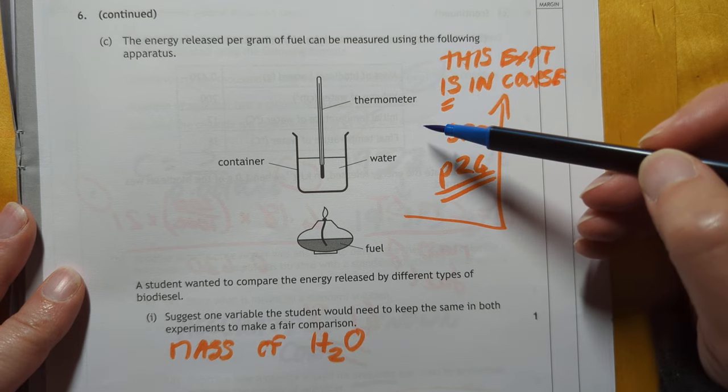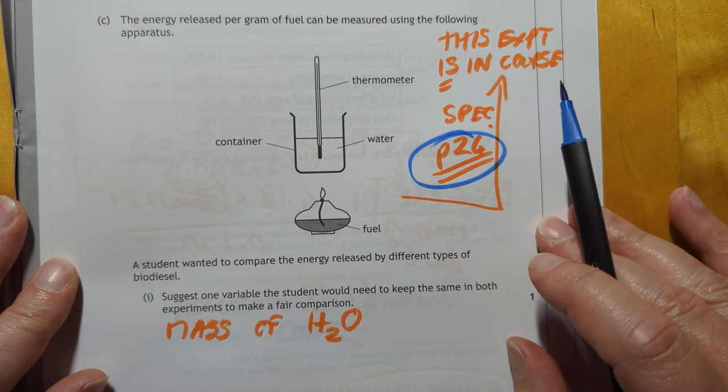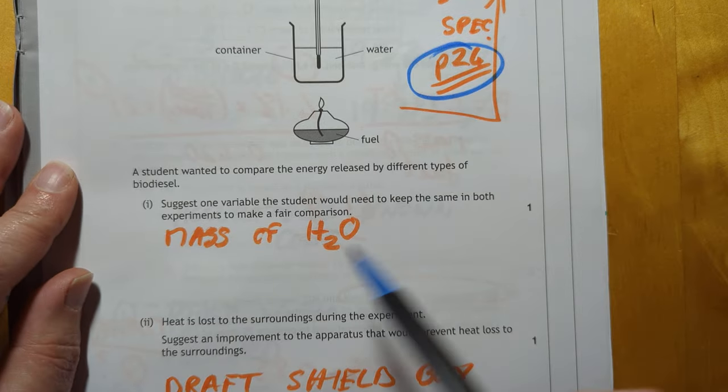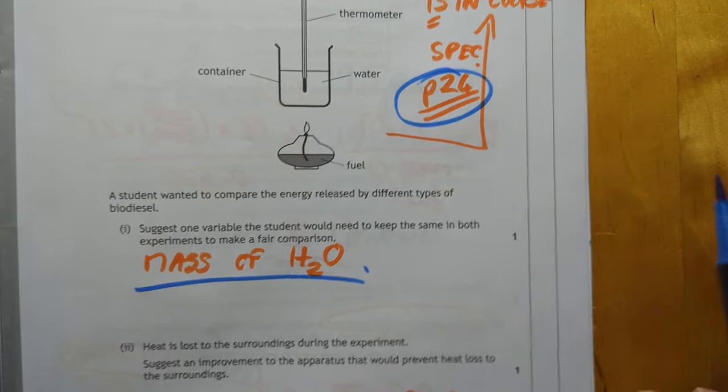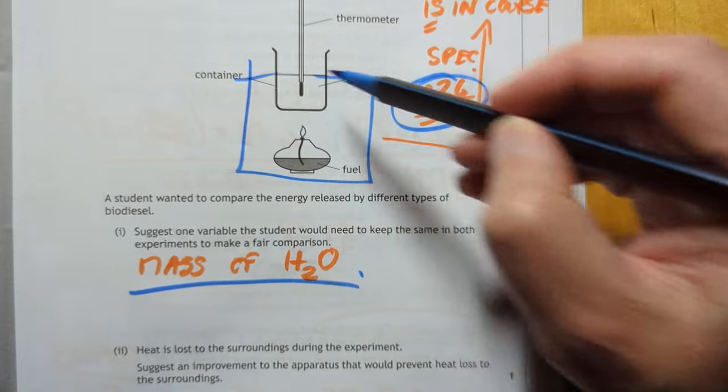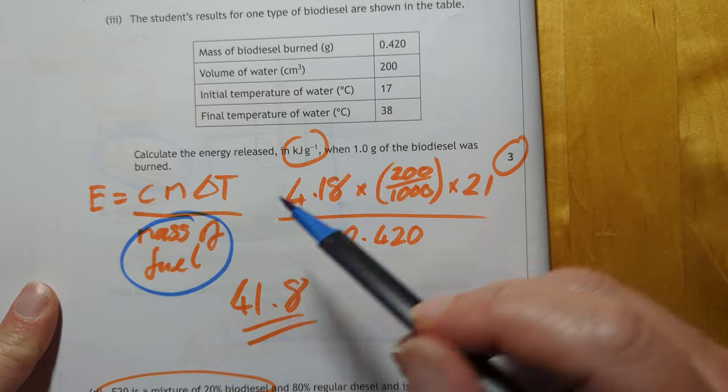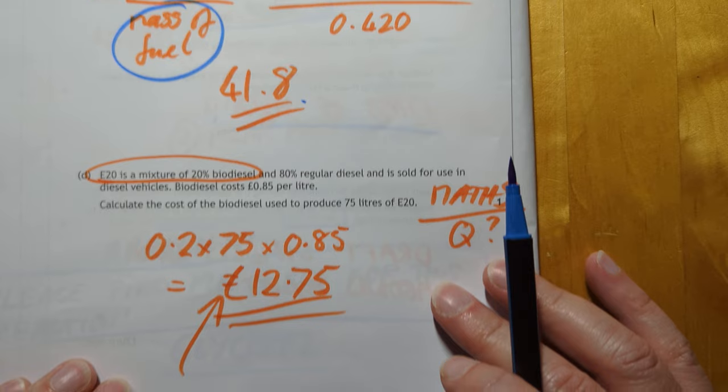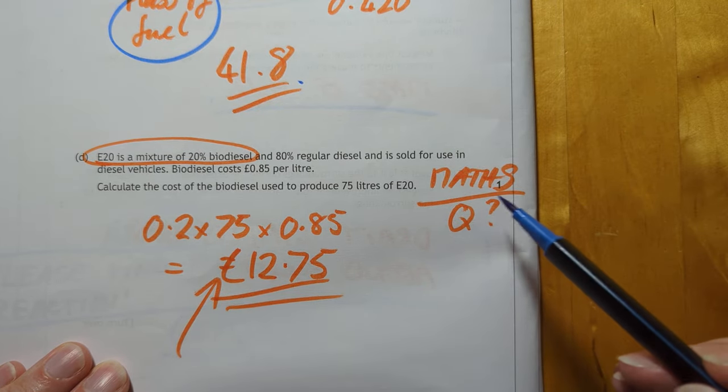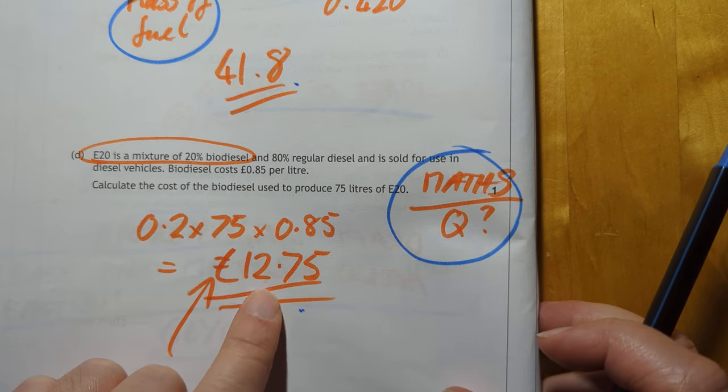This experiment here is absolutely mentioned on page 24 in research and chemistry of the course spec so I have no problems with them asking details on this one unlike the last question. Mass of water would have to be kept the same and pop a draft shield around the equipment so that will keep some degree of heat into this equipment. CM delta T divided by the mass of the fuel will calculate kilojoules per gram. 41.8 is what I get for that one. This is just have I slipped into the math department? Because this is purely a maths question. They sometimes do that. 12.75 is what I came out with.